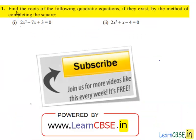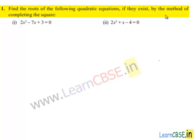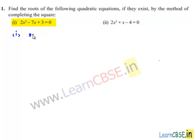Moving on to the first problem: find the roots of the following quadratic equations if they exist by the method of completing the square. The first equation given is 2x² minus 7x plus 3 is equal to 0.